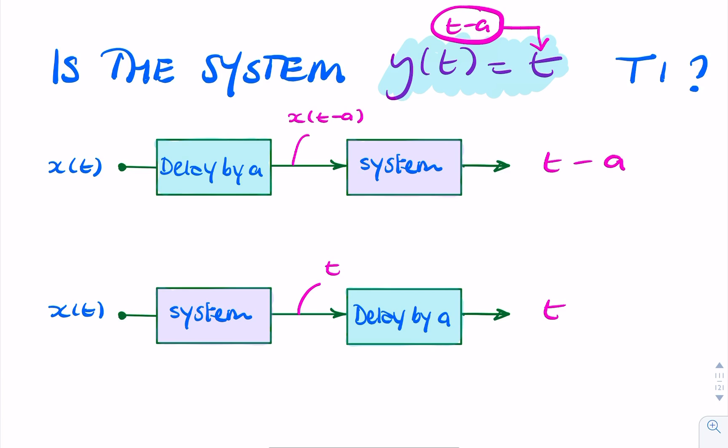So having a delay for t, which is simply a value, it's not the input, it's just a value. So delaying it, you'll still get t.